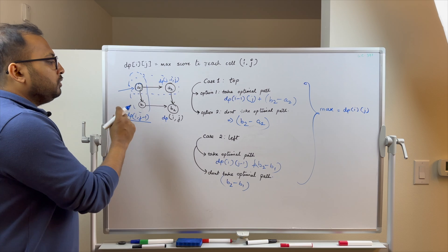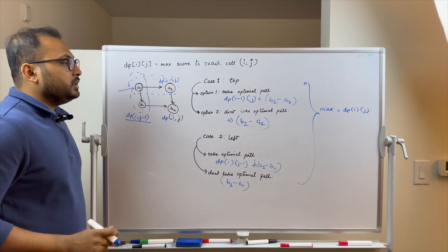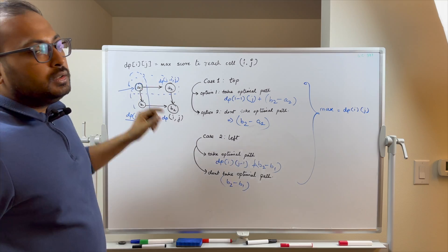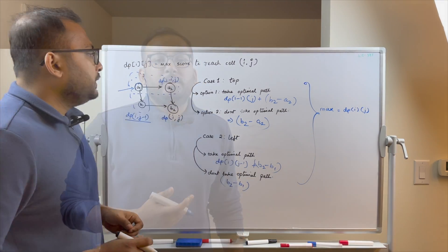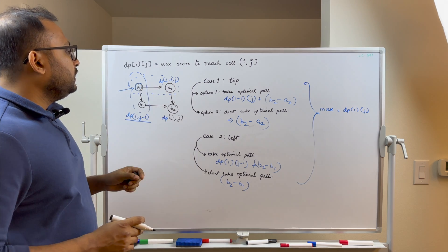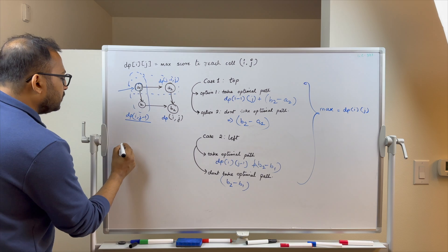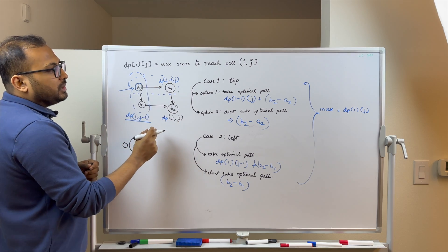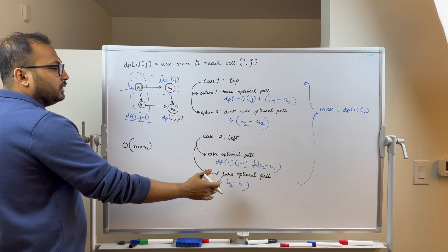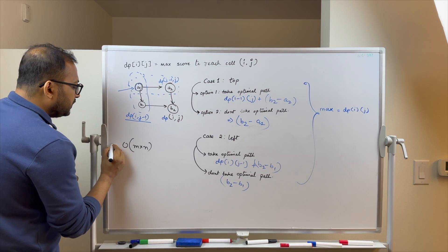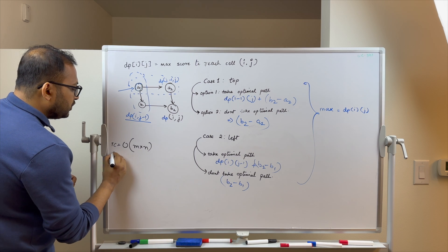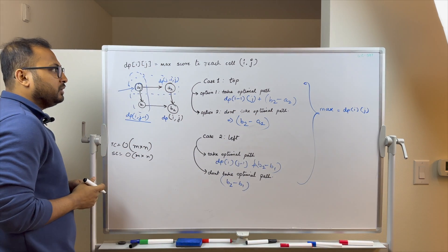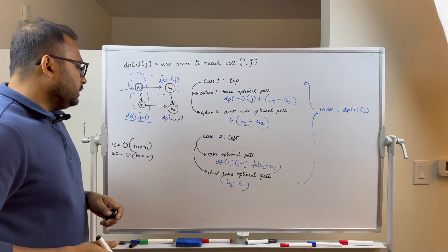Once you know the best maximum score for reaching every cell (i, j), iterate over the dp array and take the maximum among all values as the final answer. The time complexity is O(M×N) since we iterate over each cell and compute the maximum of 4 values in O(1). Space complexity is also O(M×N) for the dp array.